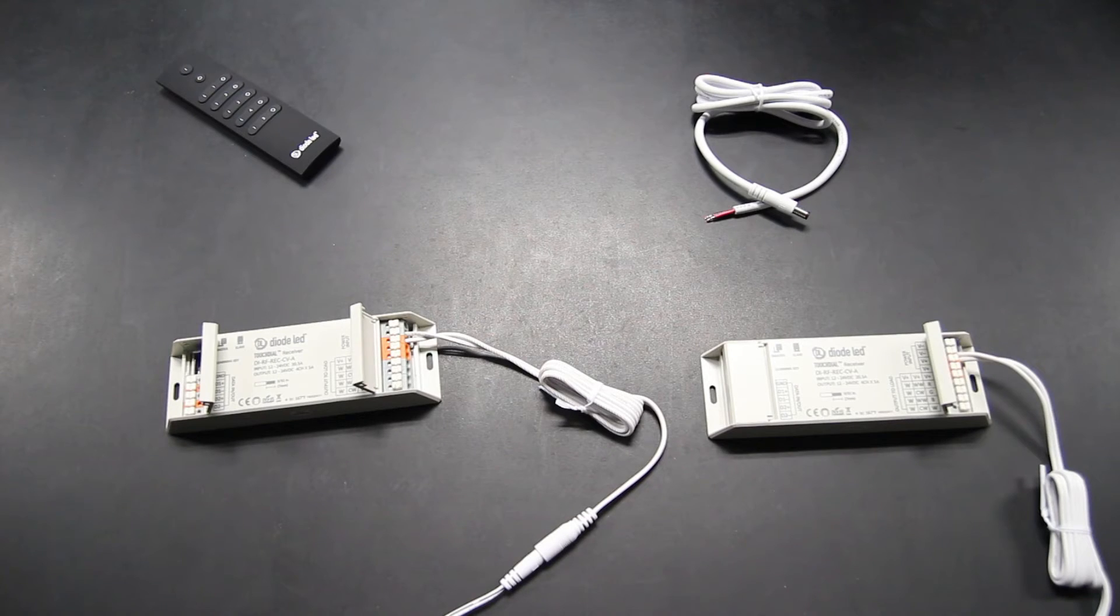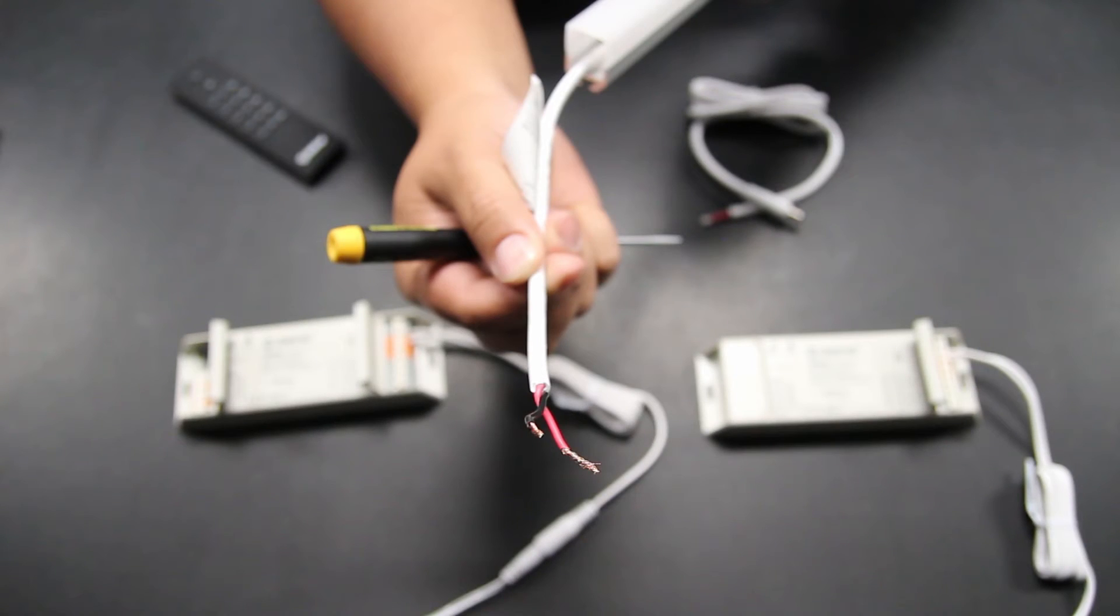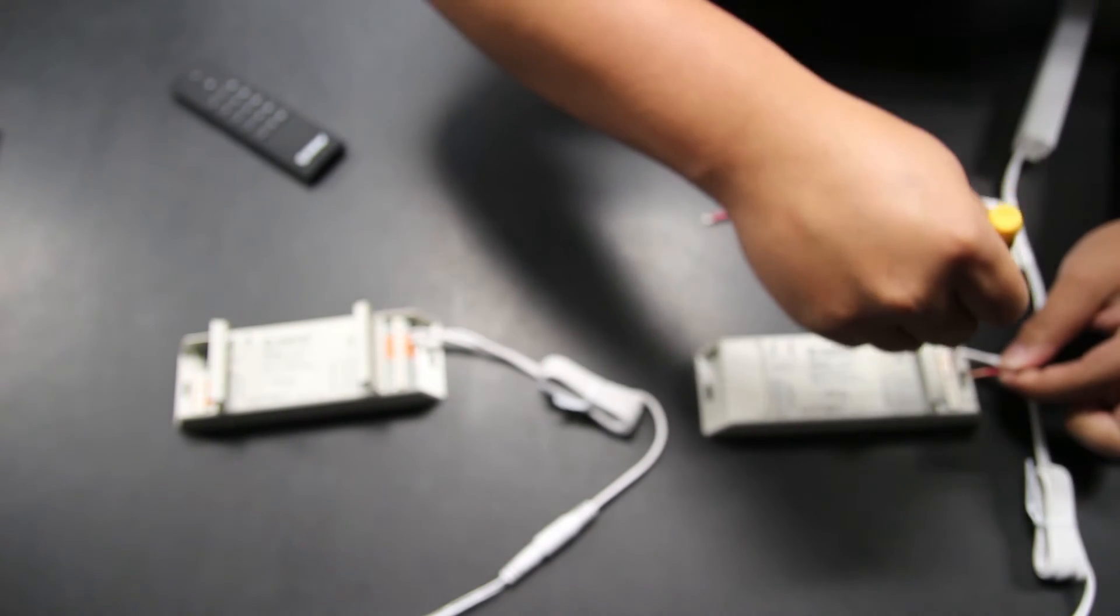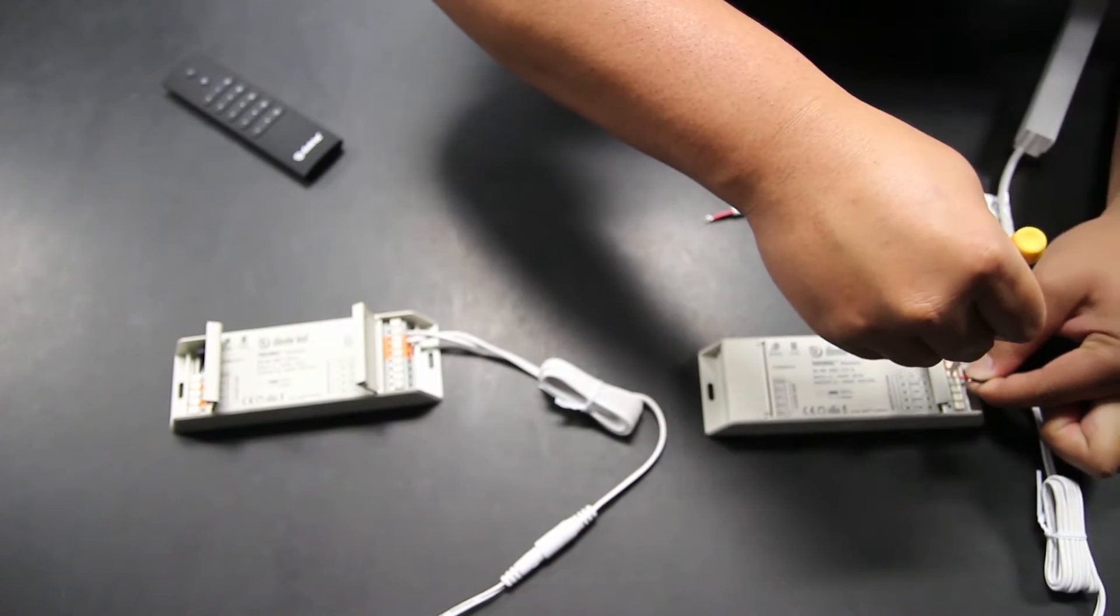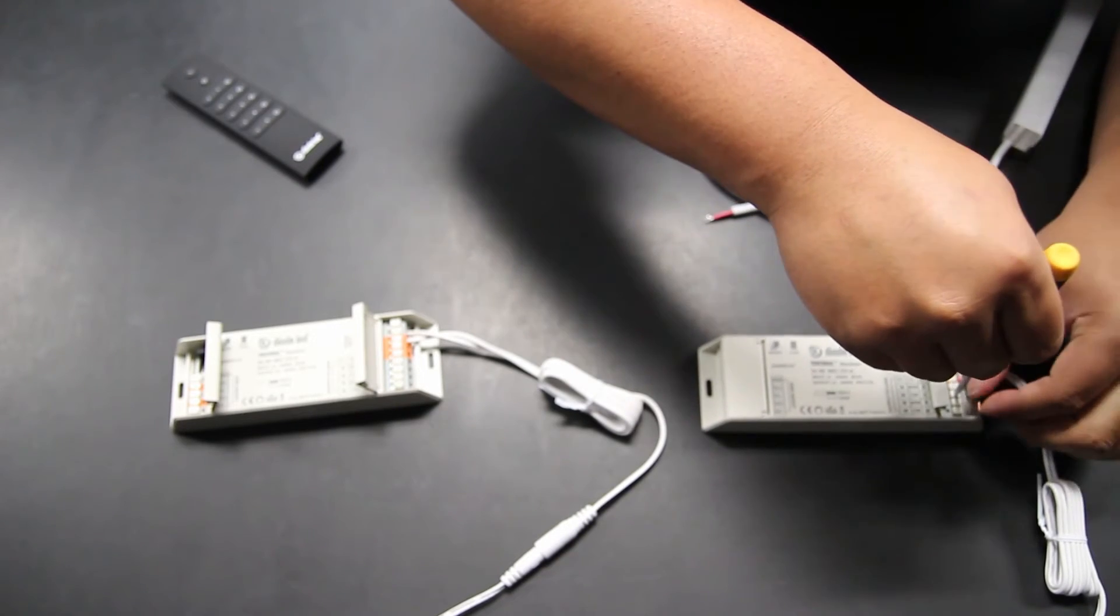Insert the single color LED lighting following the label found on the face of the TouchDial receiver. Remember, if you're experiencing difficulty with the tabs, use a flathead screwdriver or a pen to make things easier.